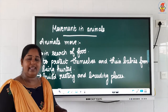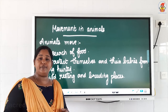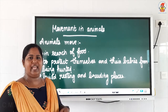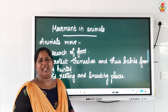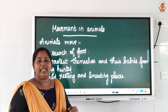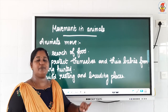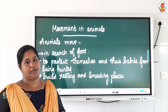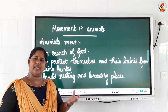Next is movement in animals. Animals need to get their food — food will not come to them. They are not sitting in a hotel ordering food. They have to go and fetch their food, run behind their prey, catch that prey, and kill that prey — a lot of hard work is needed. So they move from one place to another, and the first and foremost reason is to get their food, in search of food.